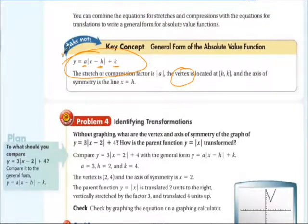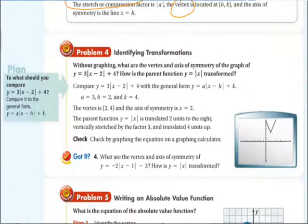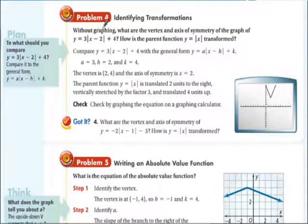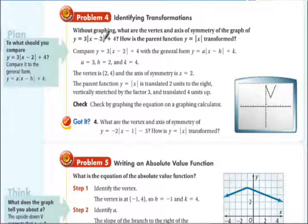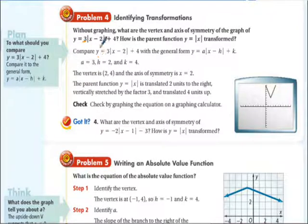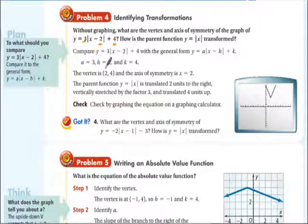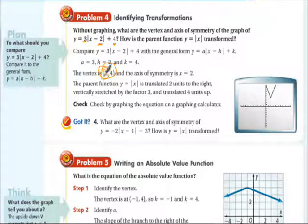Problem 4: identifying transformations. Without graphing, what are the vertex and axis of symmetry of y equals 3 times the absolute value of (x minus 2) plus 4? The parent function has been stretched by 3, shifted right 2, and shifted up 4. The new vertex is at (2, 4), and the axis of symmetry is x equals 2.